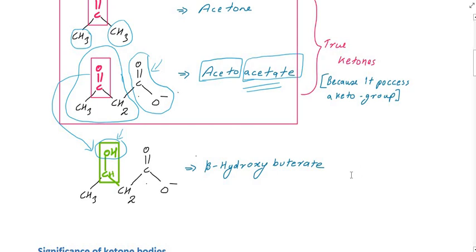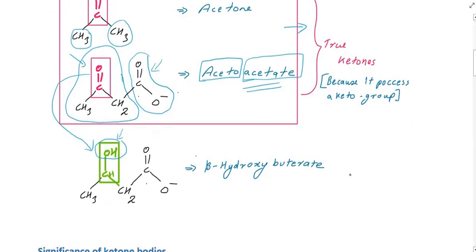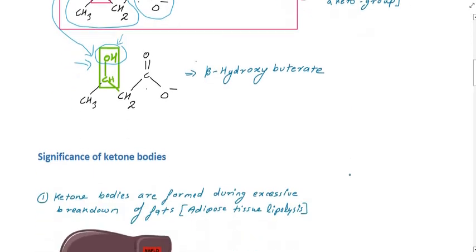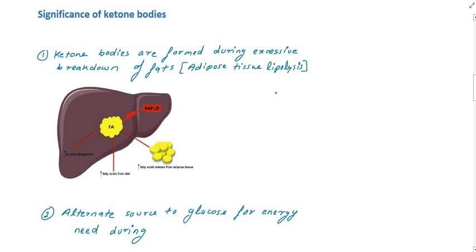Beta-hydroxy butyrate and acetoacetate are also known as true ketones. The ketone bodies: the C double bond O becomes CHOH in beta-hydroxy butyrate. The main ketones are developed when there is excessive breakdown of fat, particularly from adipose tissue.